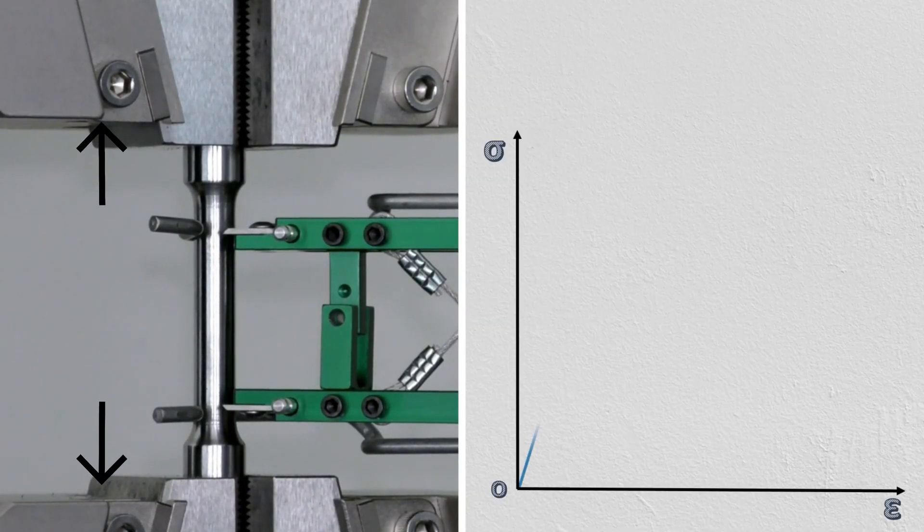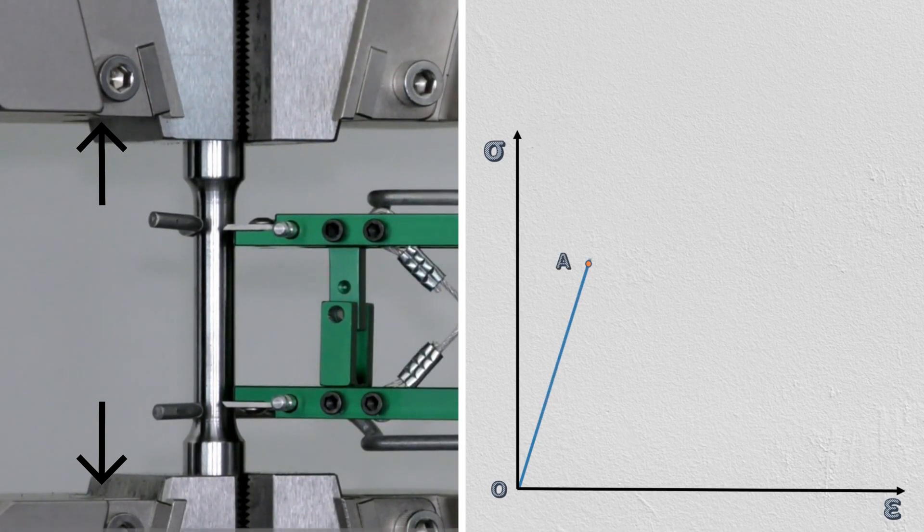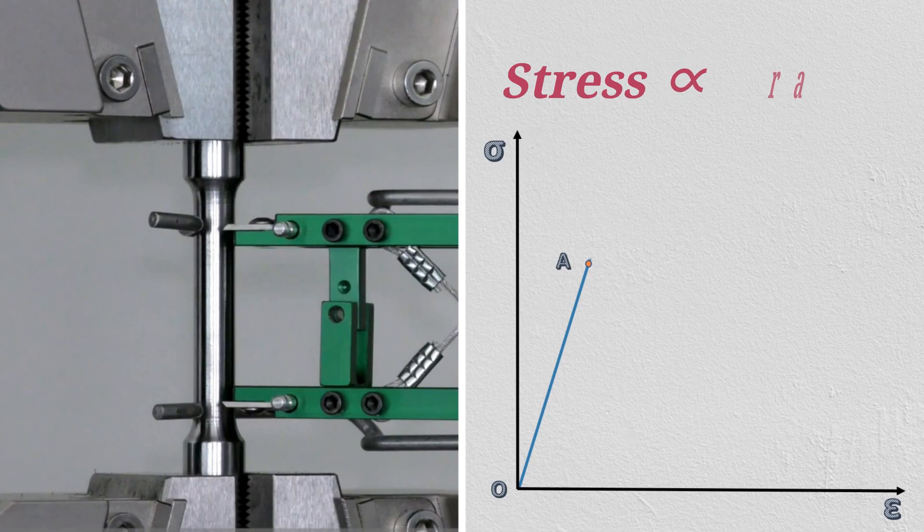If you see the stress and strain curve of mild steel, this curve is linear up to point A. And the stress is directly proportional to the strain up to this point A.